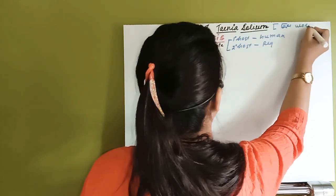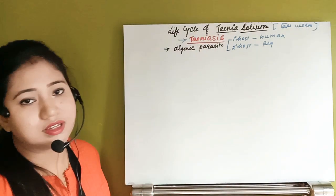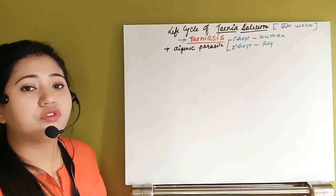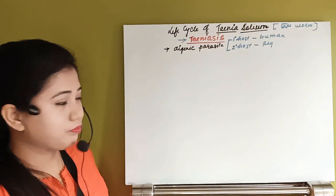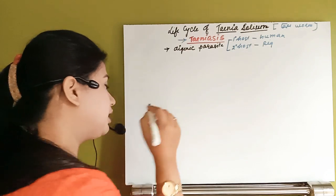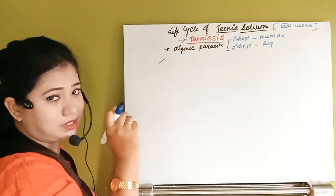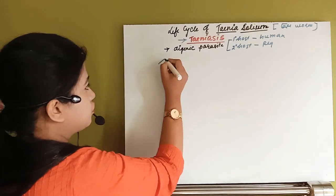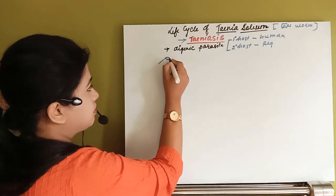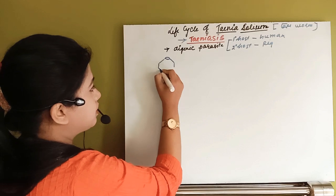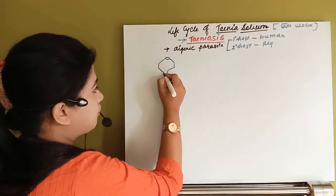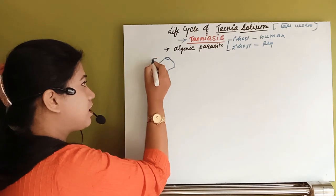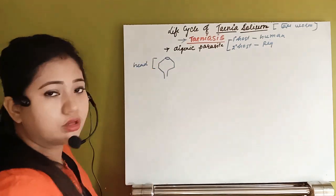Now let's see the body morphology — how this organism actually looks. First of all, the whole body is divided into three parts. So if you see this organism, it is going to have three parts. The first part is the head-like structure.